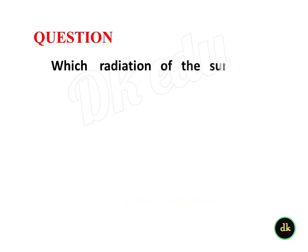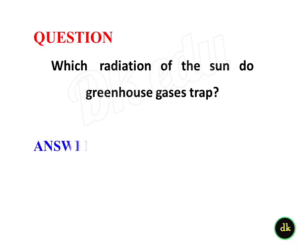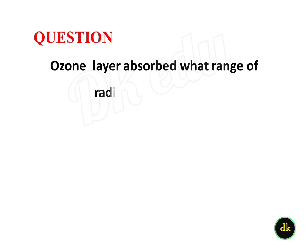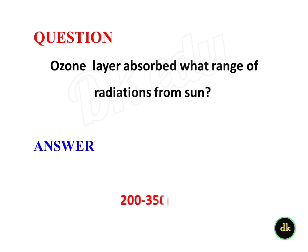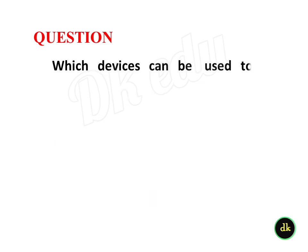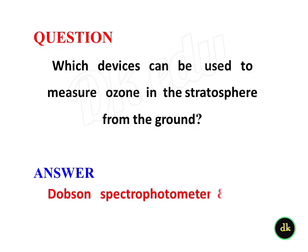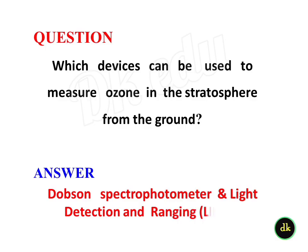Which radiation of the sun do greenhouse gases trap? Infrared radiation. Ozone will absorb a wide range of radiations from the sun: 202 to 350 nanometers. Which device can be used to measure ozone in the stratosphere from the ground? Dobson spectrophotometer and light detection engine (radar).